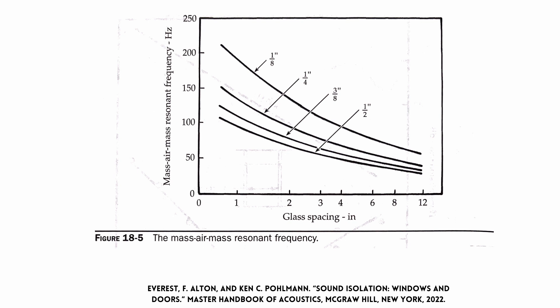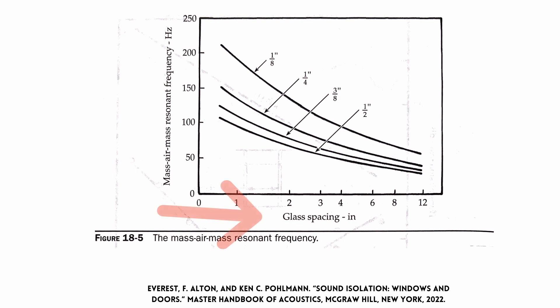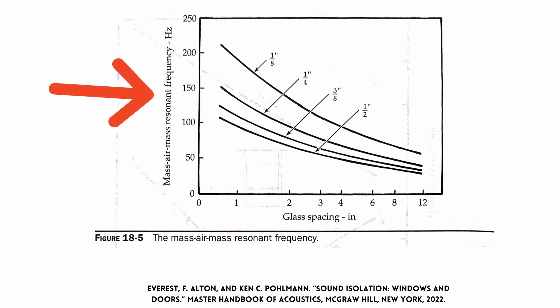Looking at this graph from the Master Handbook of Acoustics, we can see that there are specific things we can do to decrease that dip to such a low frequency that it doesn't really bother us in our room. Imagine if high frequencies in the 1,000 or 4,000 hertz range were letting sound through your window — you would really notice that in your recordings. As soon as we get down into the 50 hertz range, like subwoofer bass and kick drums, that's not going to be a huge problem. In figure 18-5, we have glass spacing in inches on the x-axis and air mass resonance frequency on the y-axis — this is the frequency at which sound will go through your glass more readily, creating what is known as the acoustic hole.